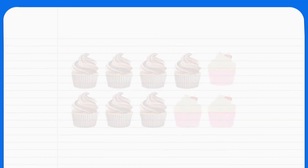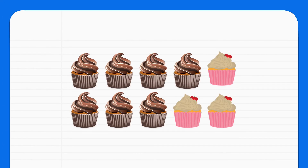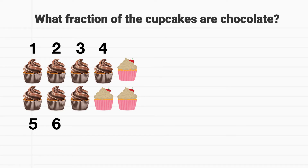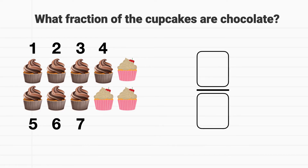Now let's look at one of these together. Here is a pack of cupcakes. Some of the cupcakes are vanilla and others are chocolate. We want to know what fraction of the cupcakes are chocolate. If I'm looking for the fraction of cupcakes that are chocolate, I can start by counting the number of chocolate cupcakes. How many chocolate cupcakes are there? There's 1, 2, 3, 4, 5, 6, 7 chocolate cupcakes. Where should this number 7 go?